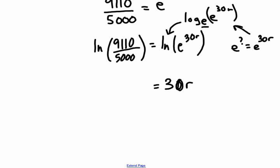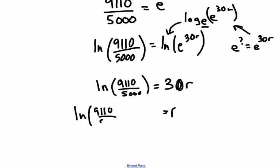That's a 30. Okay. And that equals the natural log of 9,110 over 5,000. And R equals the natural log of 9,110 over 5,000 divided by 30.